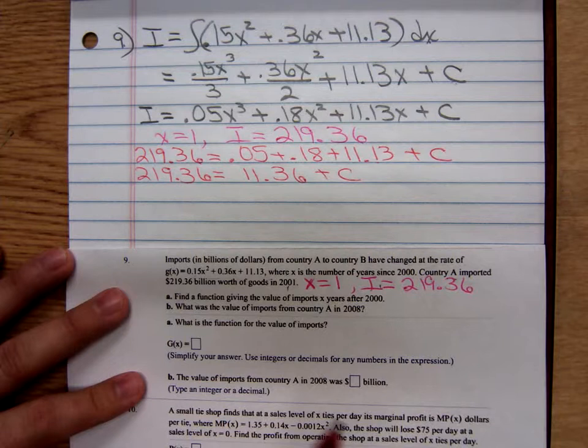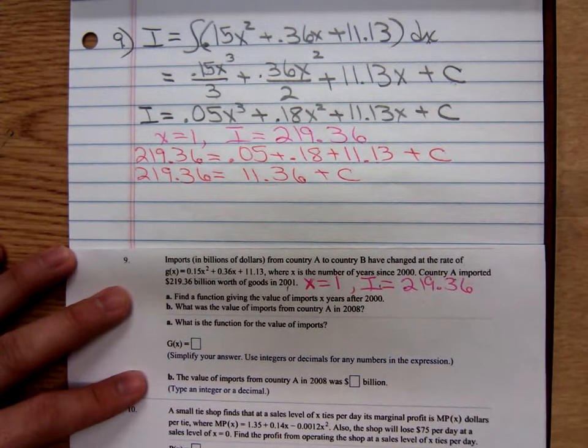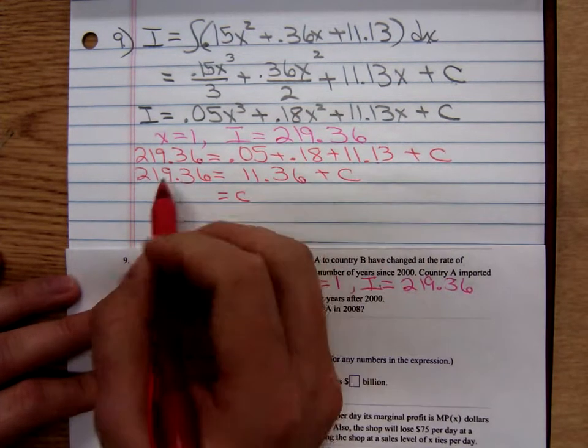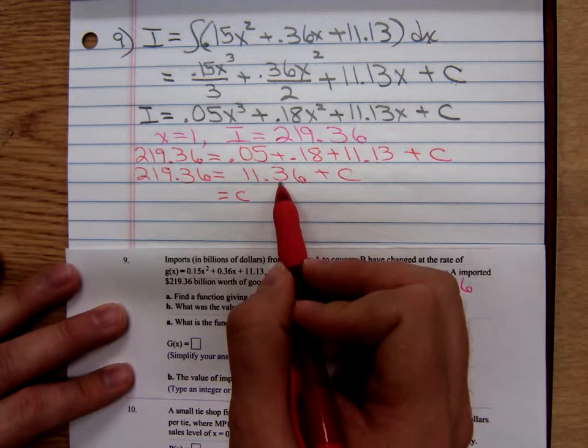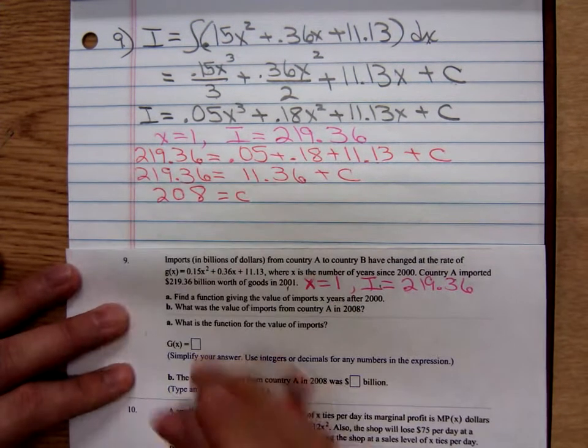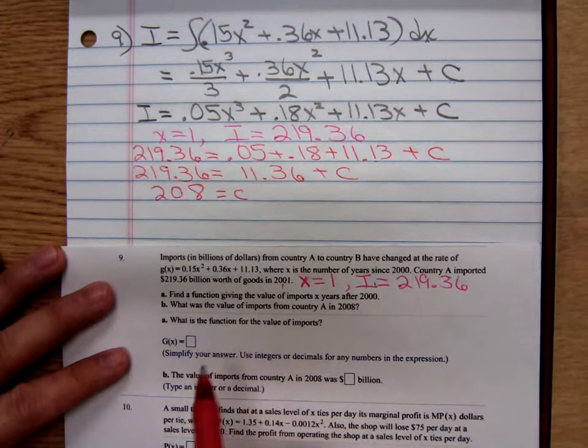Subtracting 11.36 from both sides, we're going to get a constant value of 219.36 minus 11.36, which is 208. So I now know my function, I know the function.